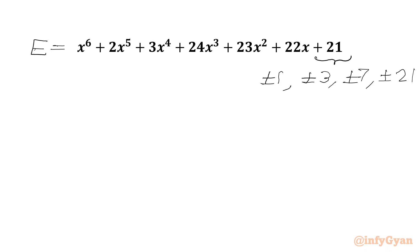Now all the coefficients of the hexic expression are 1, 2, 3, 24, 23, 22, 21 — all with a plus sign. So we have to only check or verify negative x values.